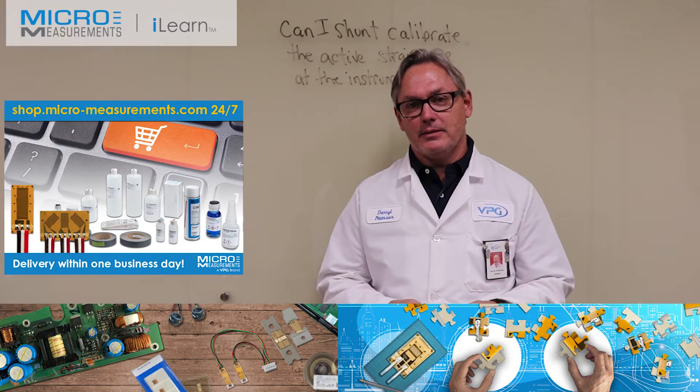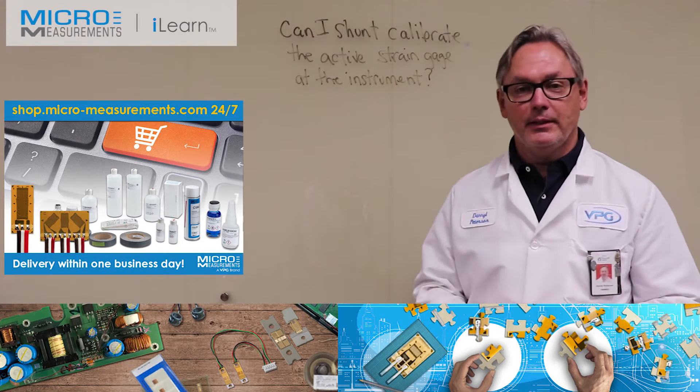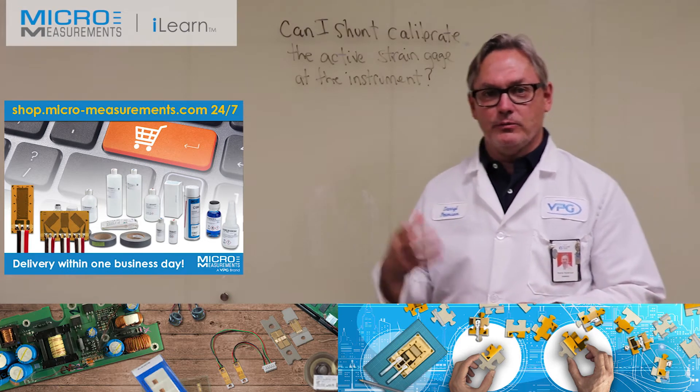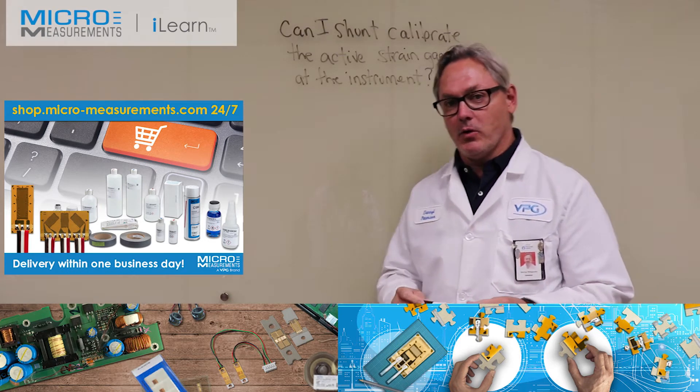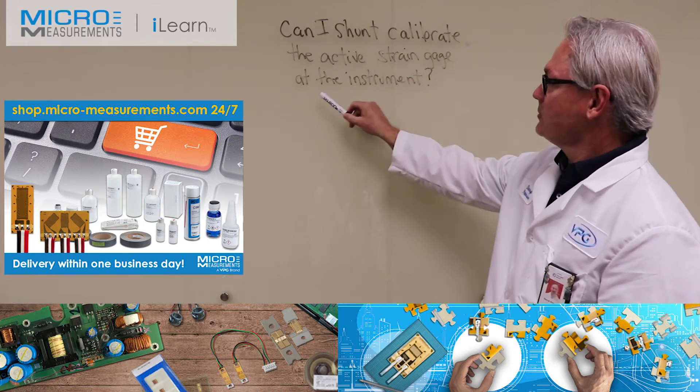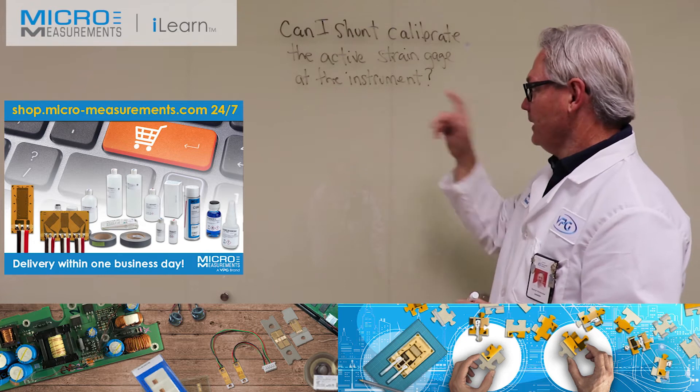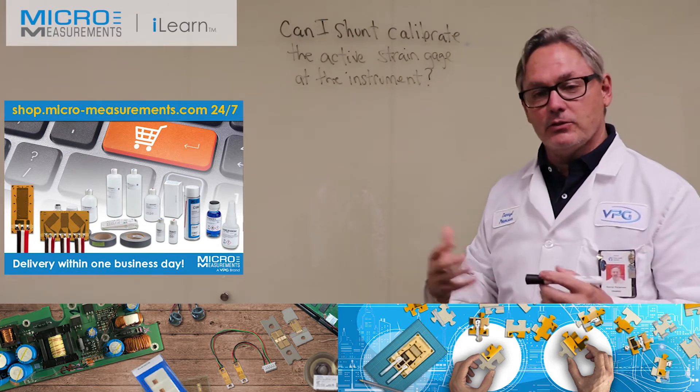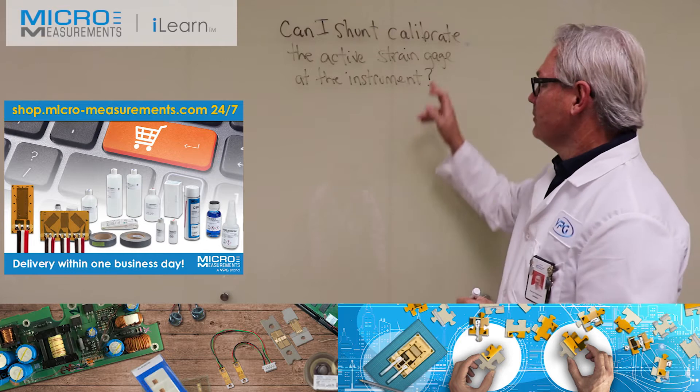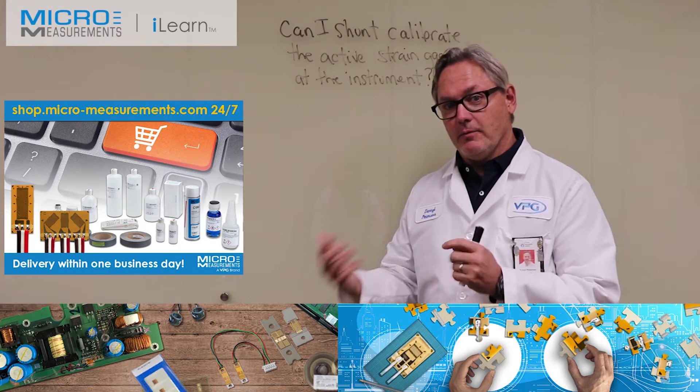I want to take a few minutes and discuss another topic with you related to shunt calibration. This is another common question we get in the Applications Engineering Department: Can I shunt calibrate the active strain gauge at the instrument? In one of the previous videos we talked about shunt calibrating the active gauge, and certainly you can do that.